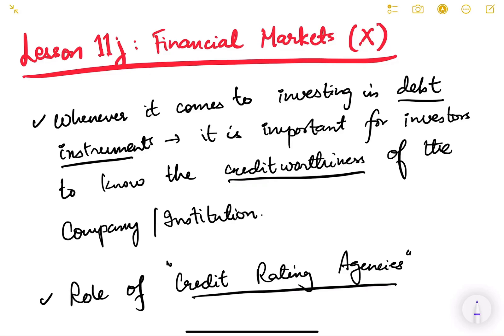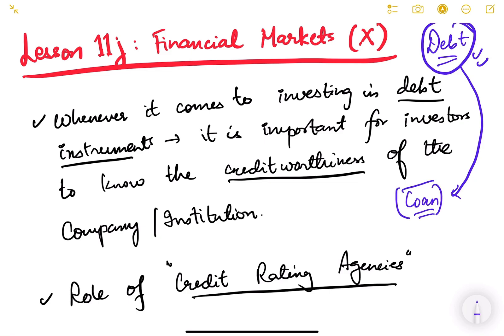Hello friends, let us continue with financial markets. We have already started debt financial instruments in the previous videos and will continue in this video also. Debt is a kind of loan that a company takes either from banks or from common people. We are going to especially look at debt taken by companies or the government from the general public in the form of debentures or bonds.